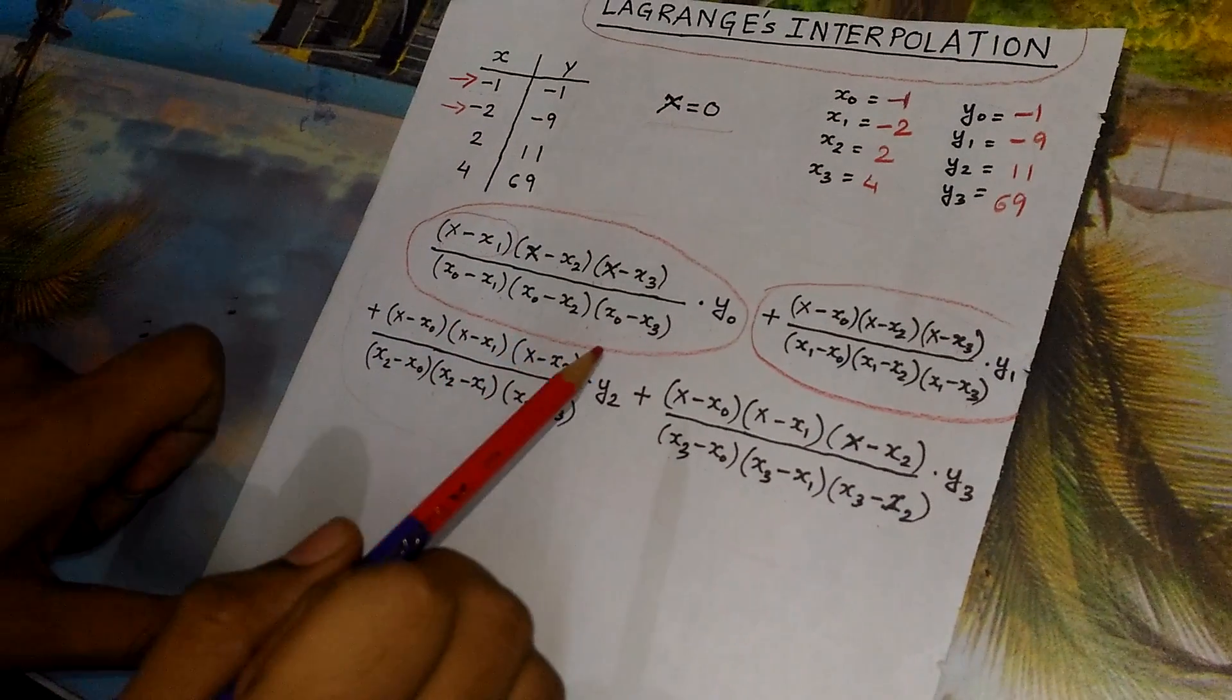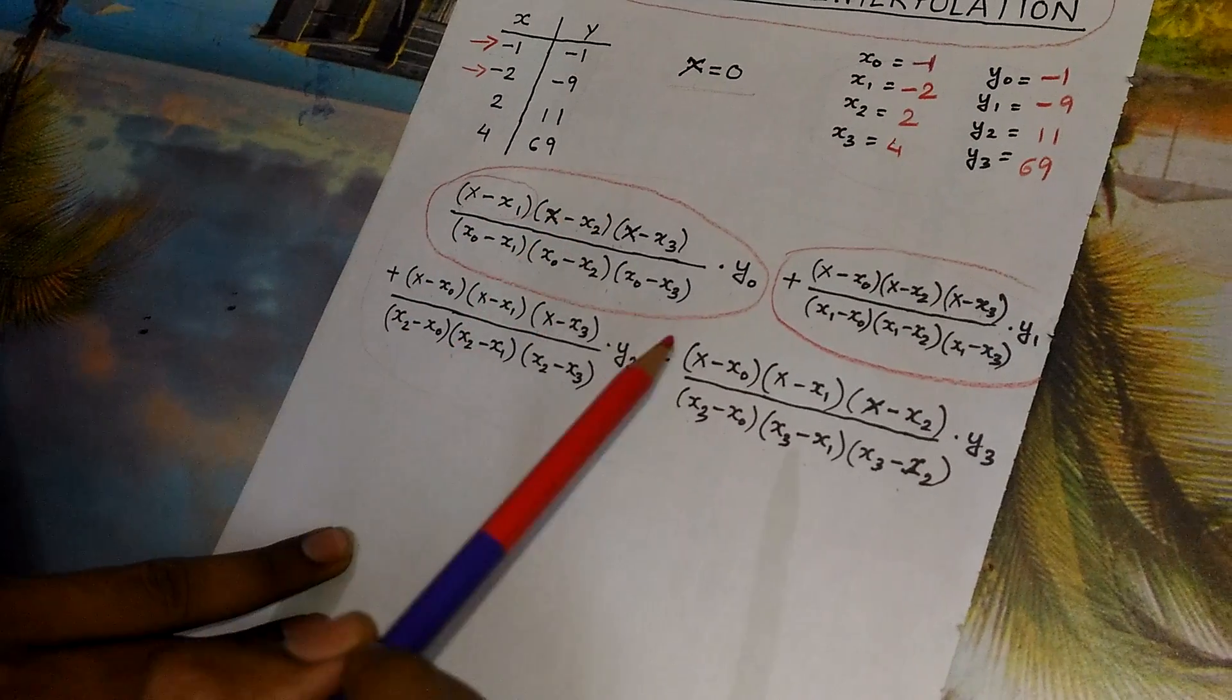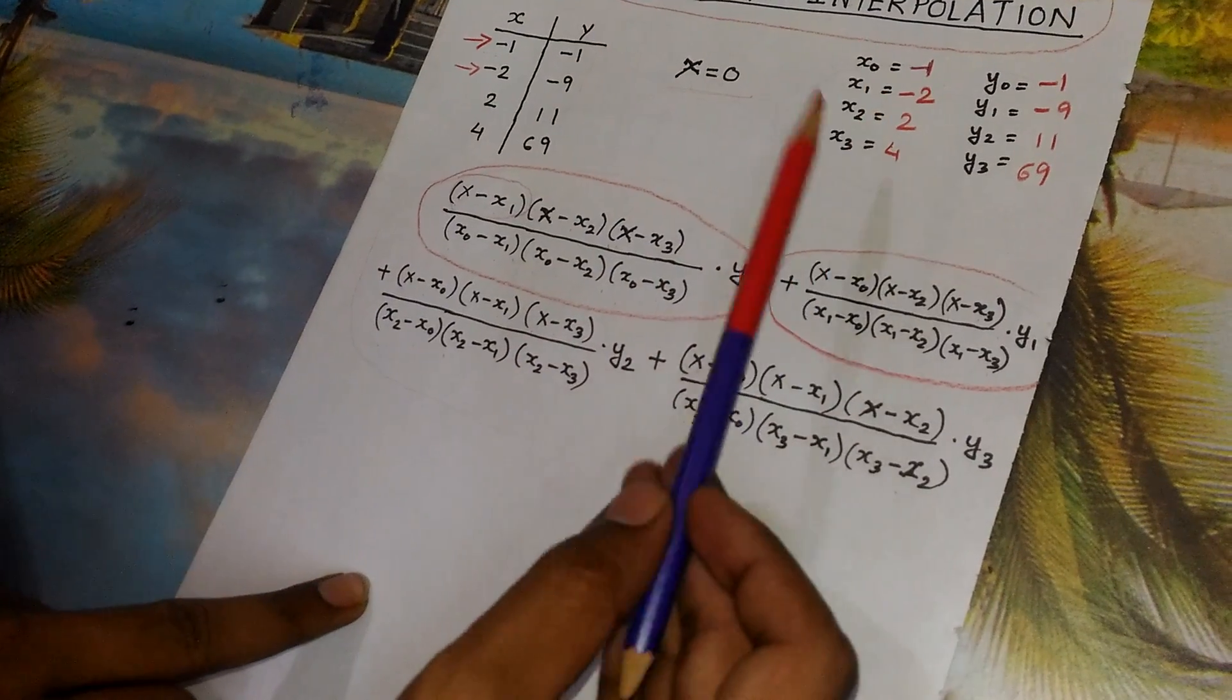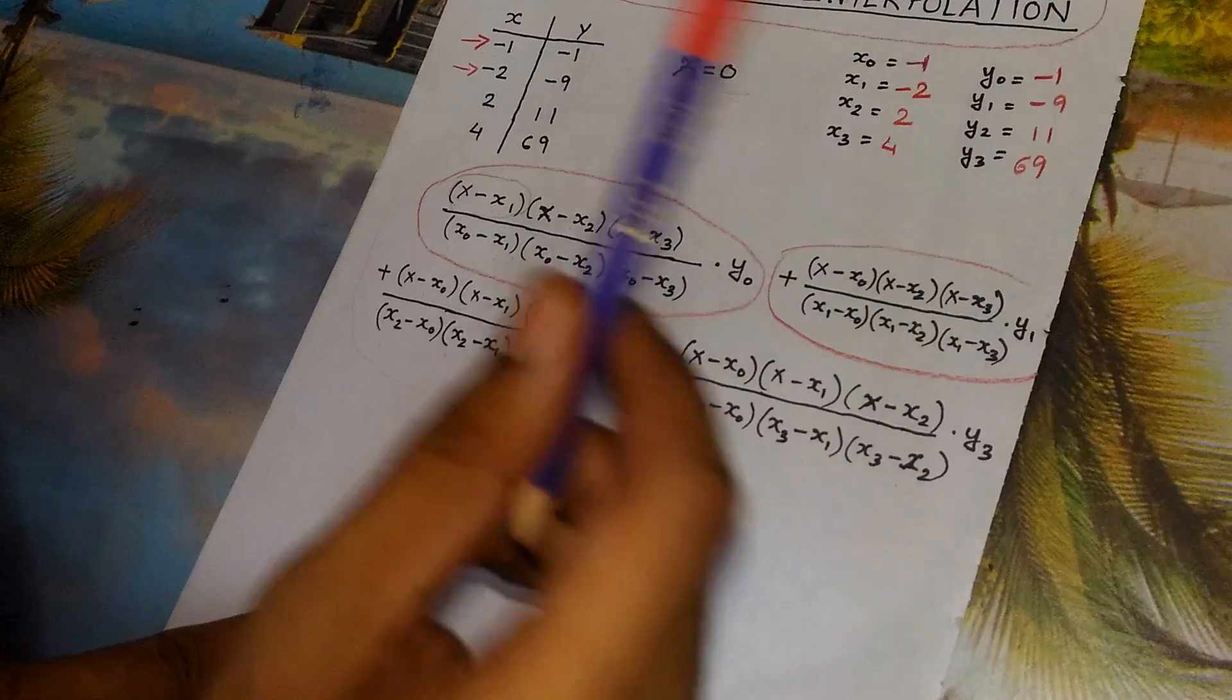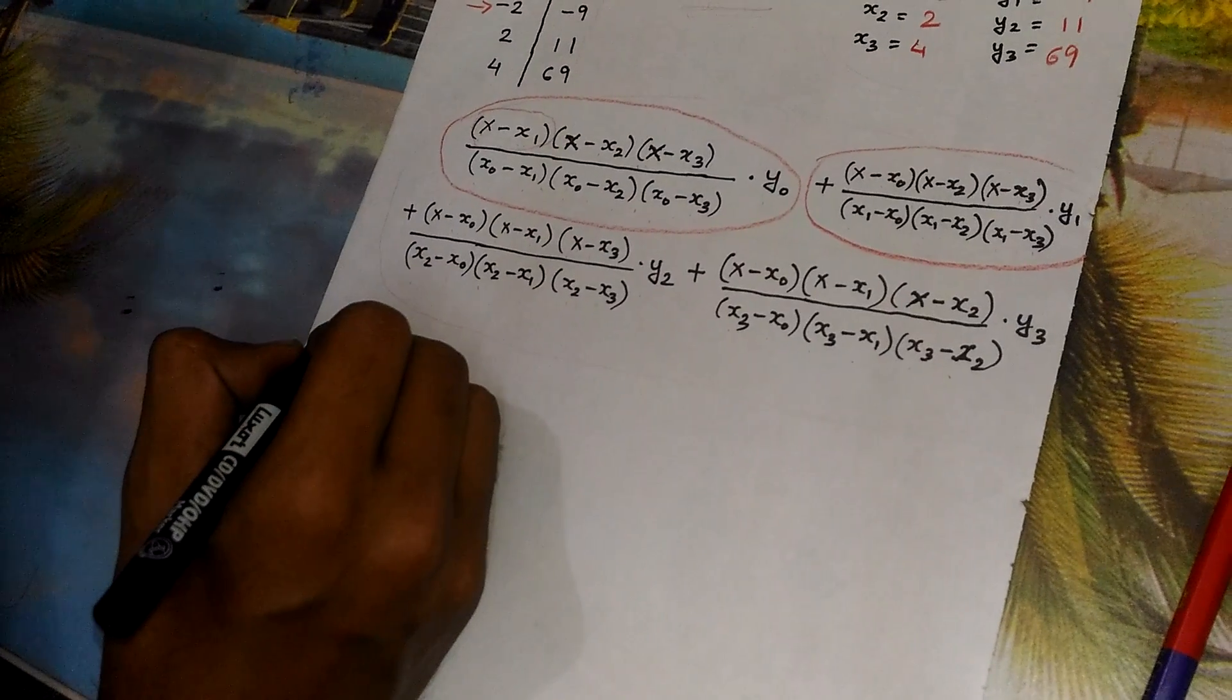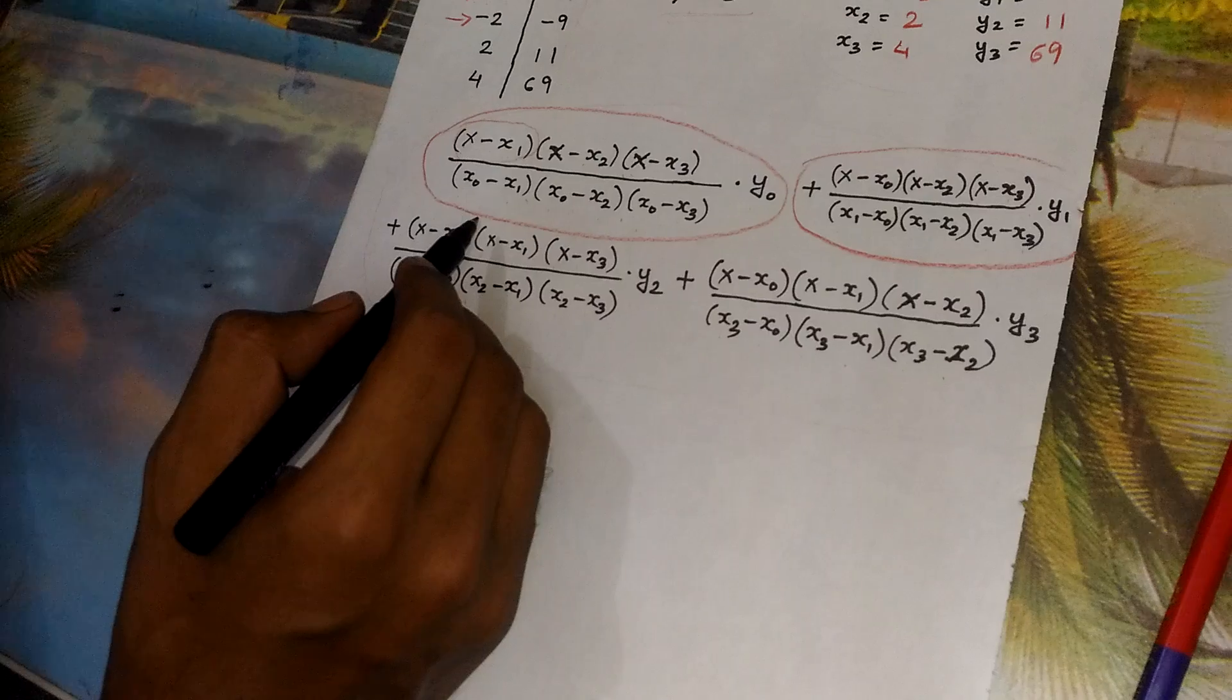Now in the question I have been asked to find the value of f(x) that is y at x equals to 0. Now I will put the values of x0, x1, x2 and x3, y0, y1, y2 and y3, and x in the formula.